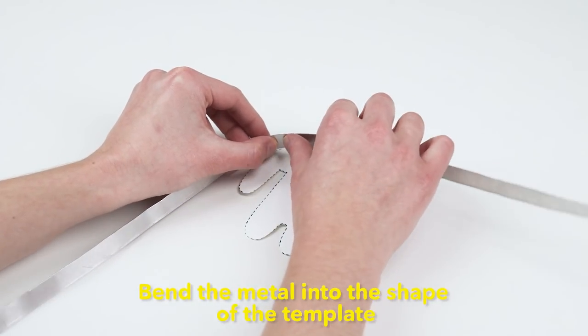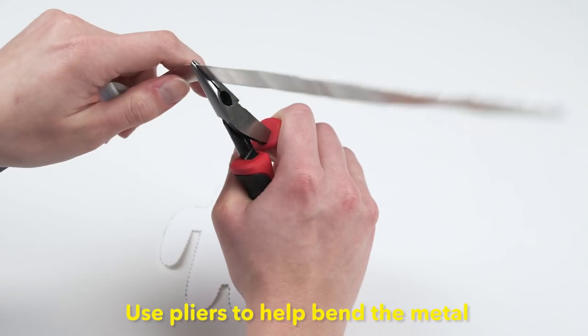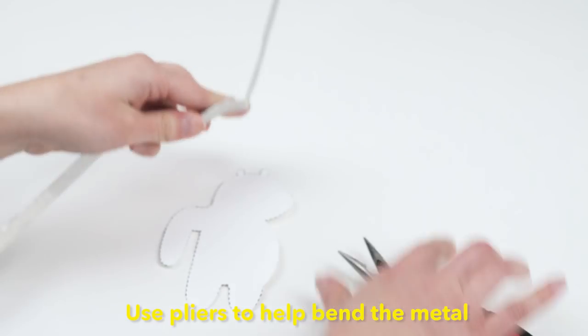Start by bending the metal into the shape of the template. Here, I started with the arm. Then, I used pliers to help bend the metal to make the ears.